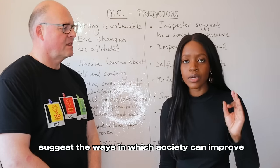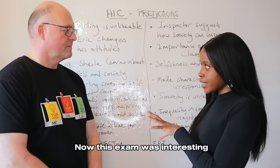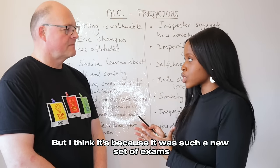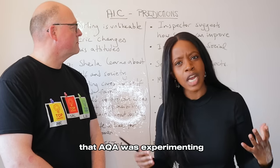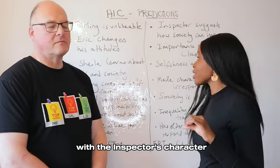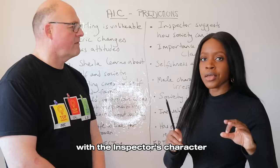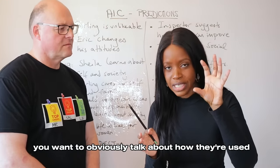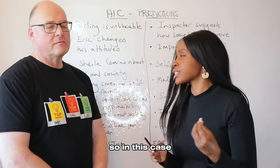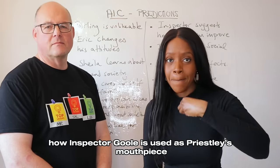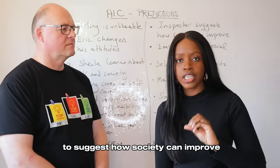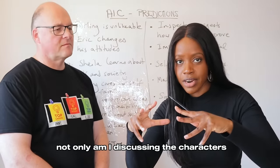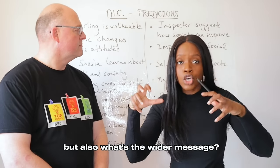For the same year, the second question students could choose from was how Priestley uses the Inspector to suggest ways in which society can improve. This exam was interesting in the sense that you had just two character questions, but I think it's because it was such a new set of exams that AQA was experimenting. When it comes to the Inspector's character, you want to talk about how he's used as Priestley's mouthpiece to suggest how society can improve, but also always think about the wider message and the themes that are relevant.